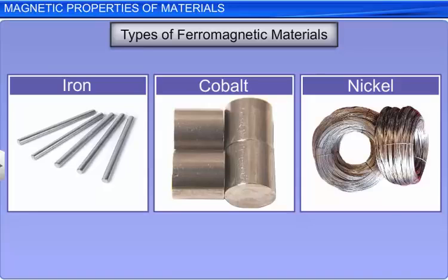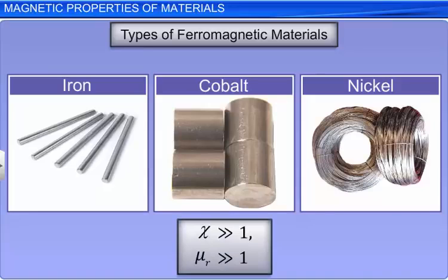The magnetic susceptibility of ferromagnetic materials is positive and very much greater than 1. The relative magnetic permeability of these materials is also positive and very much greater than 1.